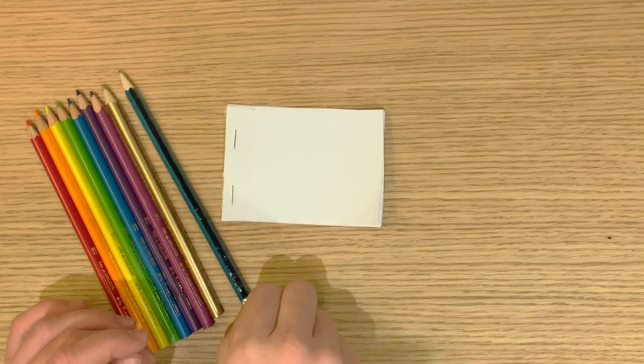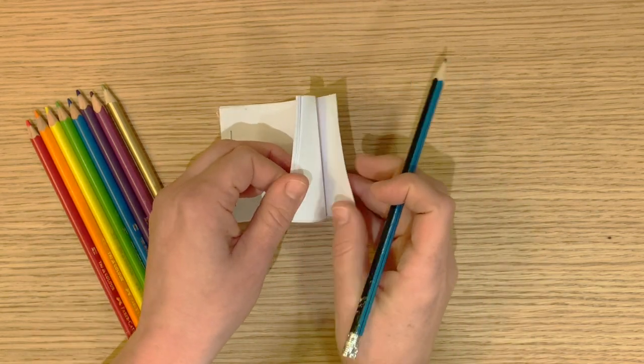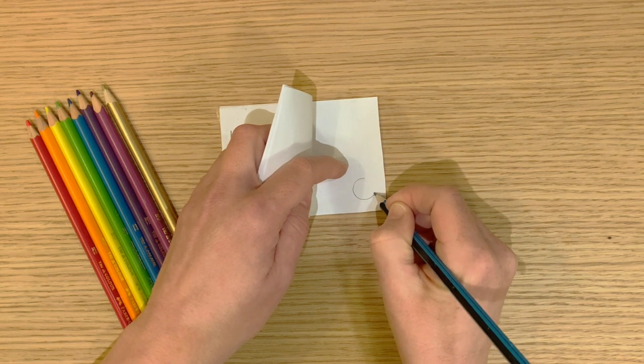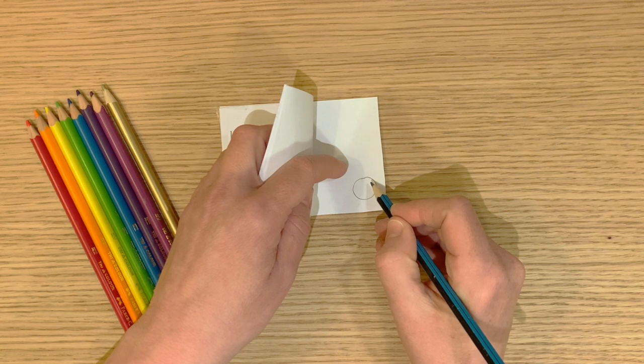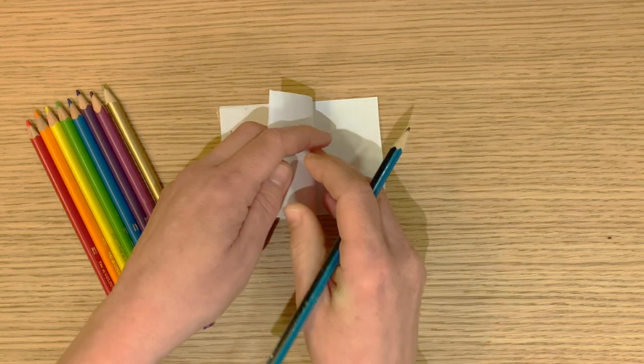The easiest way to draw a flipbook is to start with the last page so you can trace as you go. We're doing the phases of the moon so I'm going to do a big round circle and color it in. Hmm, this might take a while. Here we go!